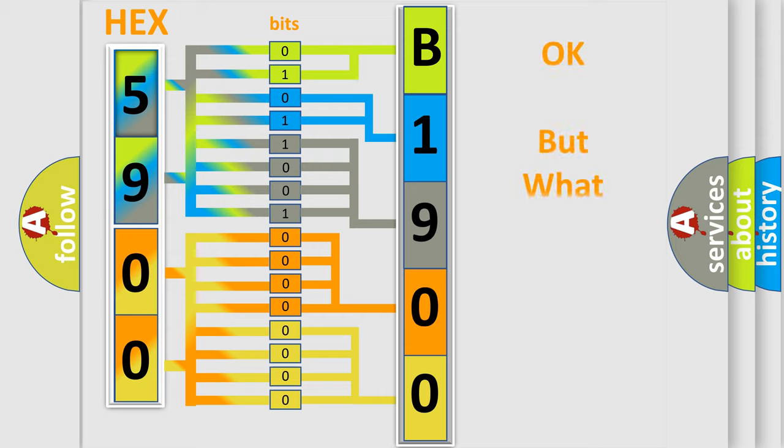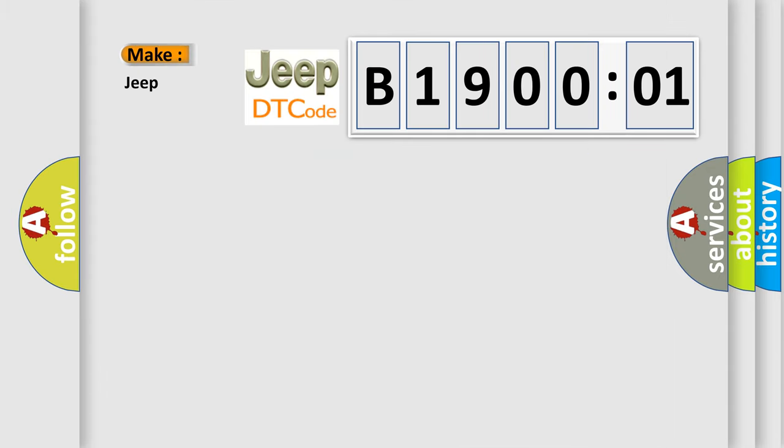The number itself does not make sense to us if we cannot assign information about what it actually expresses. So, what does the diagnostic trouble code B190001 interpret specifically for Jeep car manufacturers?